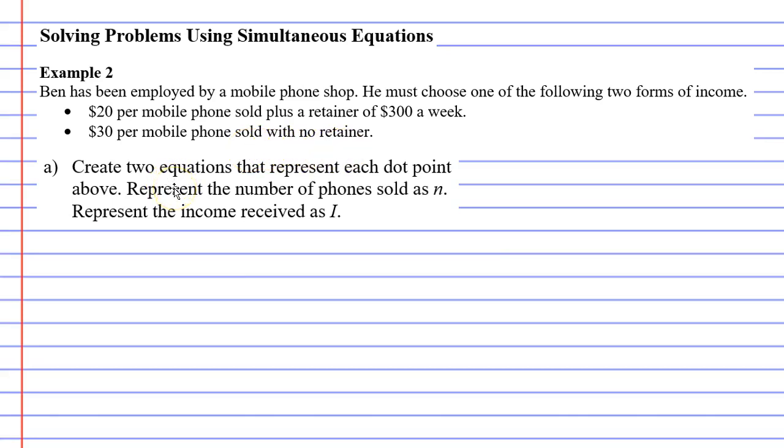If you're not sure what a retainer is, for the first instance, if Ben was to sell no mobile phones, meaning he doesn't make any money from mobile phone sales, he still gets the retainer of $300 per week. Whereas in the second instance, he doesn't get a retainer, but he gets more money per mobile phone he sells.